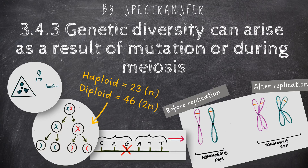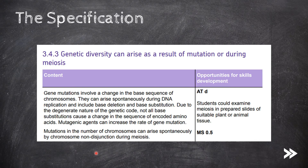Welcome to SPECTransfer and to topic 3.4.3: genetic diversity can arise as a result of mutation or during meiosis, from the AQA A-level biology specification. First we'll start with an overview of what gene mutations are, and then we'll focus on base deletion and base substitution mutations specifically. Note that there are other types of mutations such as addition, duplication, inversion and translocation mutations, but these will be covered later in topic 3.8.1.